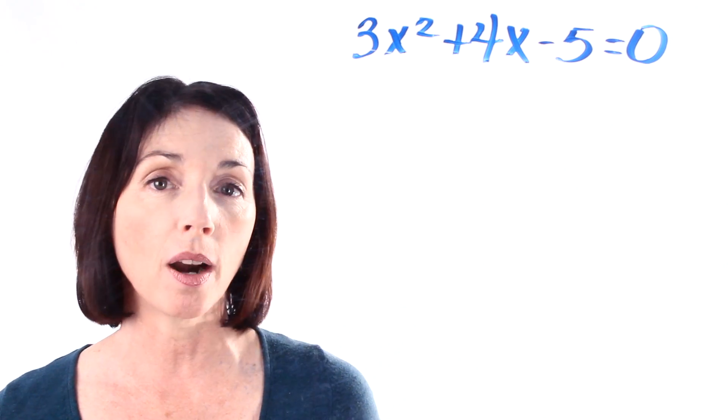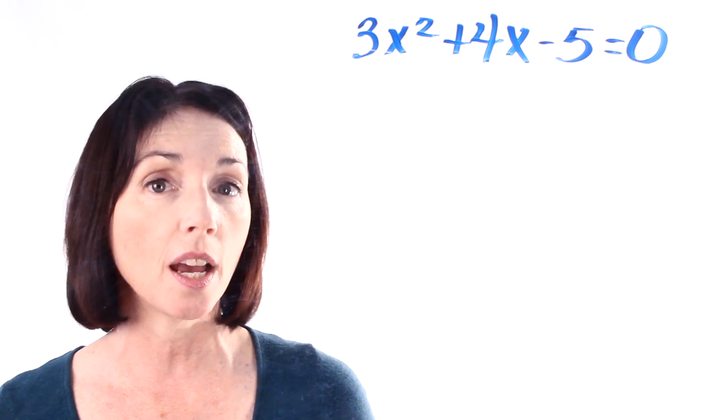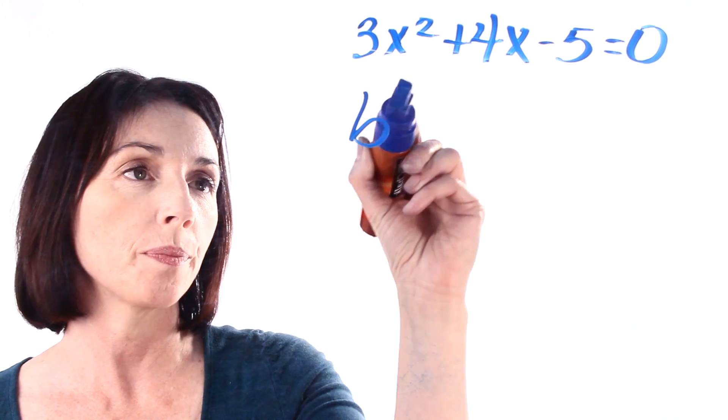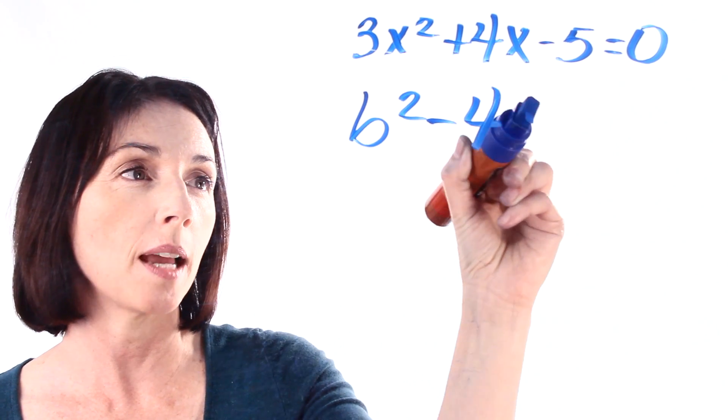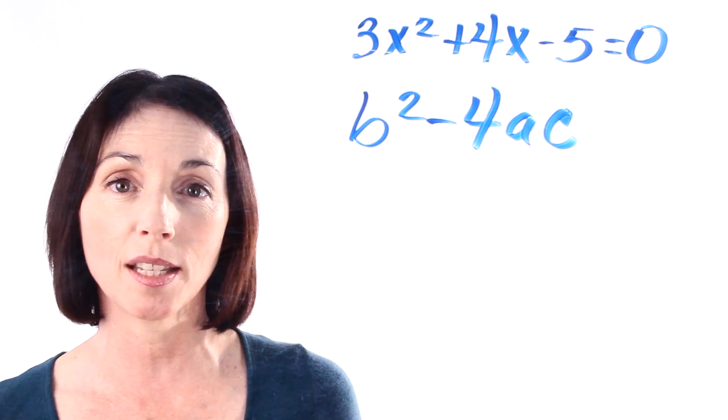The discriminant is the part of the quadratic formula that appears under the square root symbol. It's b squared minus 4 times a times c. So let's see what we get.